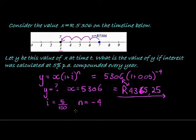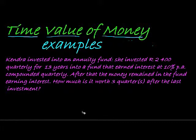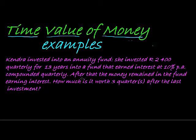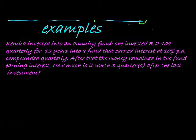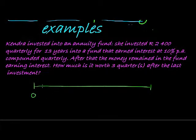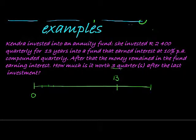Now here's a time value of money question that is a little more challenging. Kendra invests into an annuity fund — she invested R2,400 quarterly for 13 years into a fund that earned interest at 10% per annum compounded quarterly. After that the money remained in the fund earning interest. How much is it worth three quarters after the last investment?